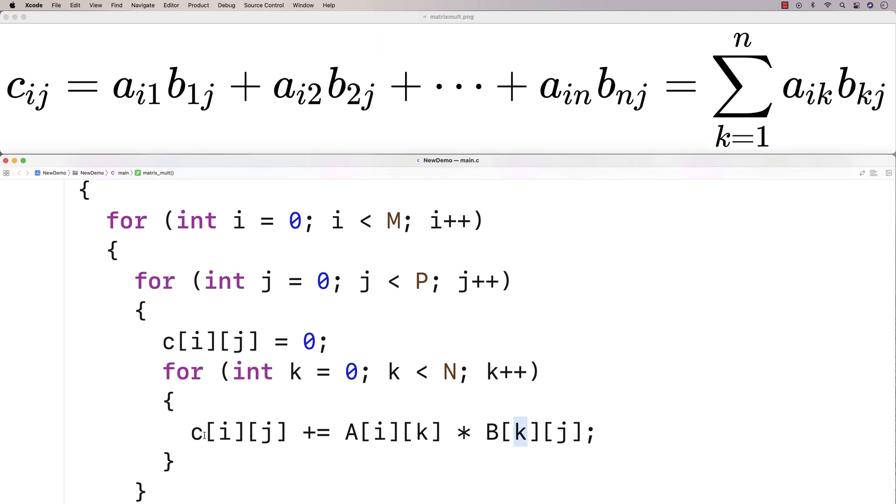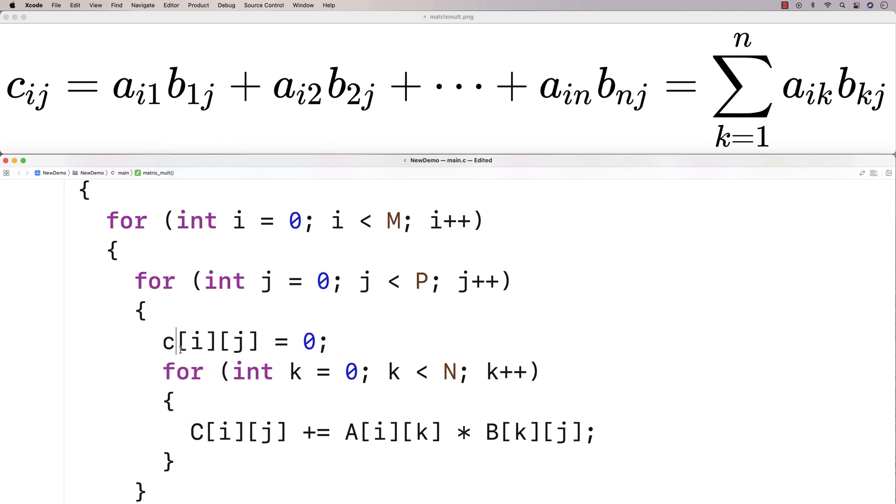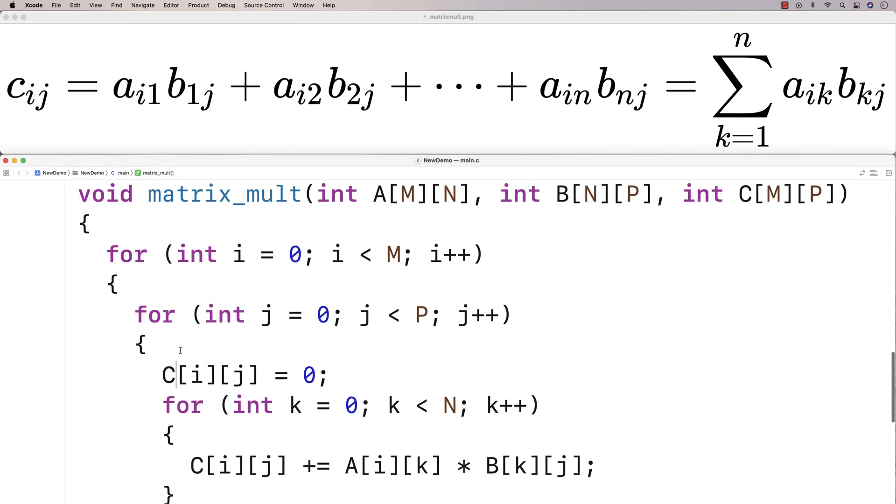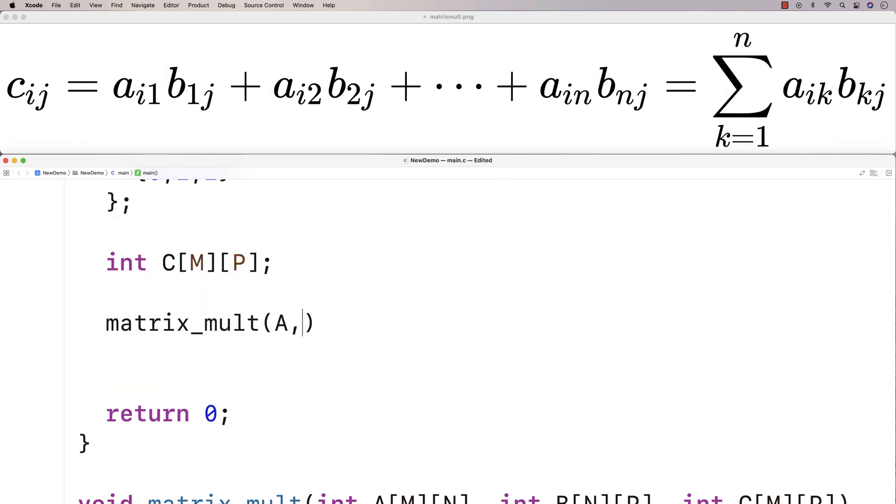So let's actually try to use this function now. I'm just going to fix C here and make it capital like in our parameter there. So we'll call this function. Here I'll say matrix_mult and I'll give it A, B, and C as arguments.